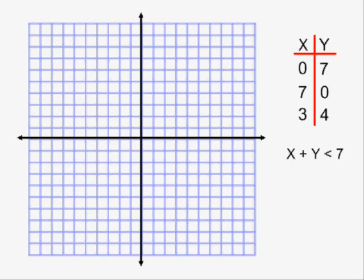Now it's time for me to put my line on the graph. I'm going to use a dotted line because the symbol is less than and not less than or equal to, and therefore the points on the line are not part of the solution set.